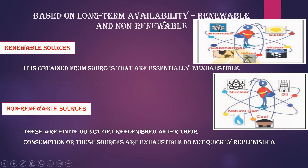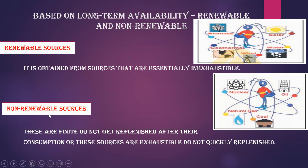Based on long-term availability, energy is divided as renewable and non-renewable. Renewable sources include geothermal, biomass, solar, water, and wind — these are essentially inexhaustible. You cannot make wind extinct because it is naturally occurring; as long as there are trees and forests, we will get wind. Non-renewable sources include nuclear, oil, natural gas, and coal — once depleted, you cannot replenish them. These sources are exhaustible.